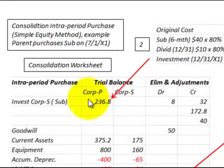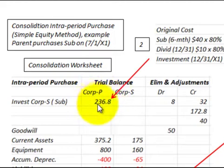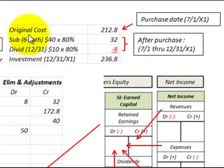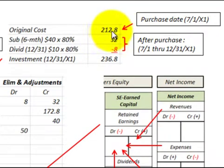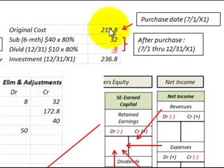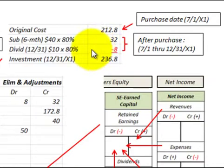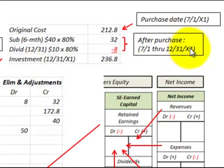The next item to be concerned with is the parent's investment account in the subsidiary, and that has to be updated through the end of the year to the 12-31 X1 date when making this consolidation. The original cost at the purchase date — what the parent paid for the subsidiary — was $212,800, based on the purchase date of 7-1 of X1, and they bought an 80% interest in the subsidiary. We now have to include the income earned for the six-month period after the purchase date, between 7-1 and 12-31.